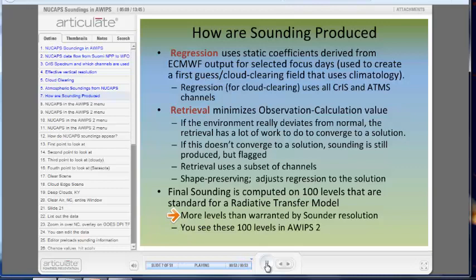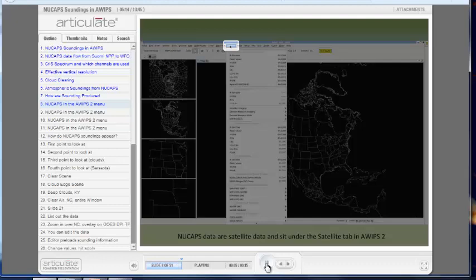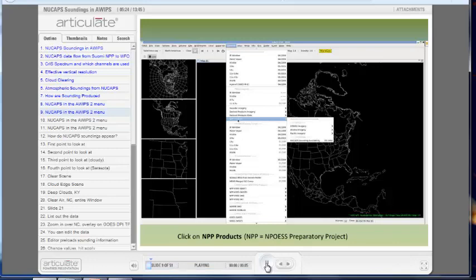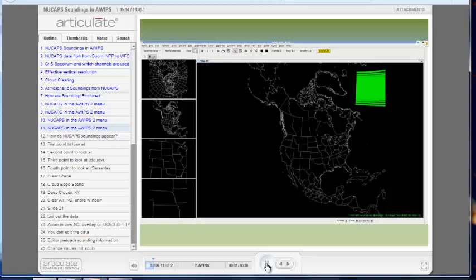How do you access NuCAP soundings in AWIPS2? NuCAP soundings are satellite data. They sit under the satellite tab in AWIPS2. Click on it, and then click on NPP products. Under NPP products, you'll see NuCAP's sounding availability. Click on NuCAP's sounding availability.